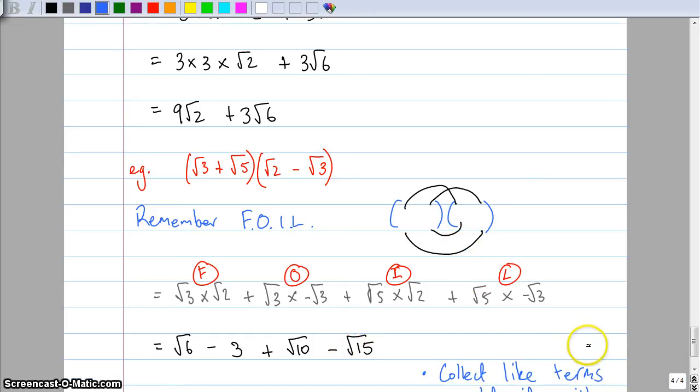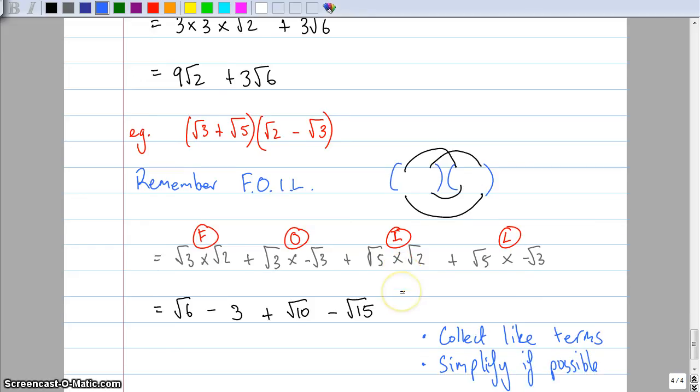I collect any like terms. In this case, none of them are similar. So none of those ones are the same at all. And the other thing is, I simplify if possible. Now I look into all of these and I can't simplify any of them. But these two things I always need to do, collect like terms and simplify if possible.